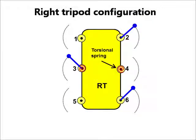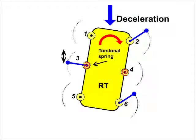In a right tripod configuration, the robot will stand on two right rigid legs and one compliant center leg. During deceleration, the robot will turn clockwise because only the left leg will be bent.